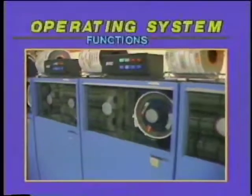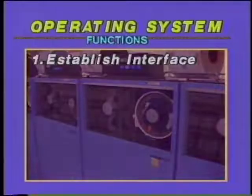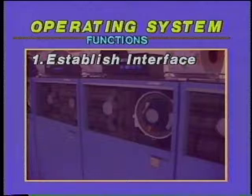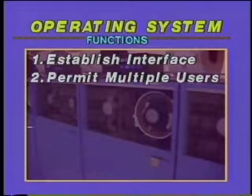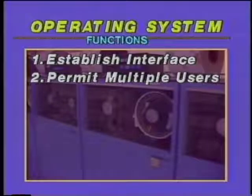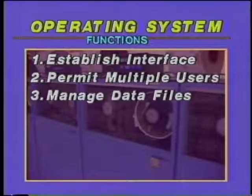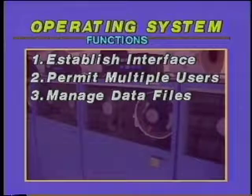One function of all operating systems is to establish the way users interface with the computer — for example, how data are stored on files and how programs are initiated. A second function of operating systems is to permit multiple users to share the same hardware. A third function is to manage data files so that data may be shared among several users or applications, and potential users can be scheduled and unauthorized access prevented.